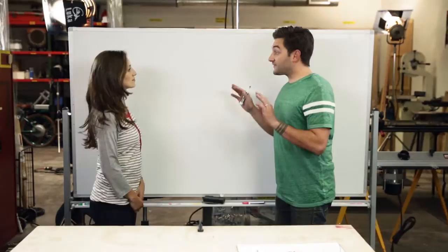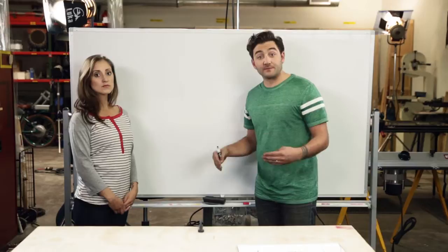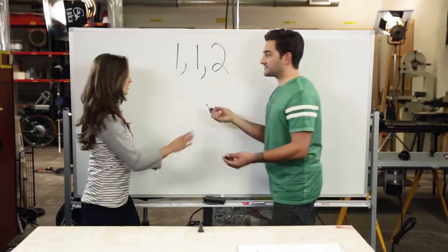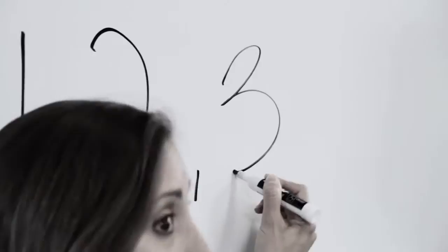I've never thought of it that way. I've only ever heard of the Fibonacci sequence. A classic. So the Fibonacci sequence — you start with the first two numbers, and it defines each successive number to be the sum of the previous two numbers. So you've got one plus one equals two. And the next number would be two plus one is three.